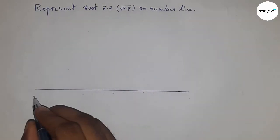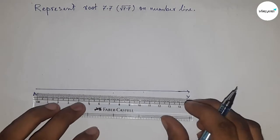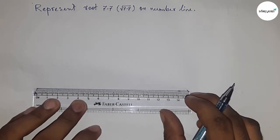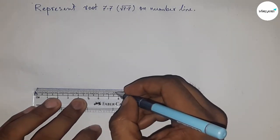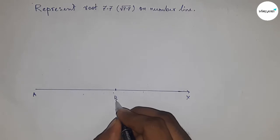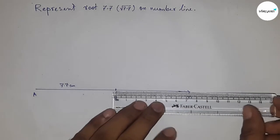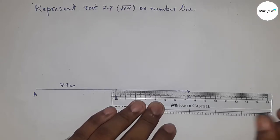First, draw a line of any length and take this as the x-axis line. Next, take a length of 7.7 centimeters. Mark point B, so AB equals 7.7 centimeters.